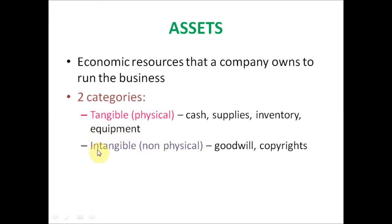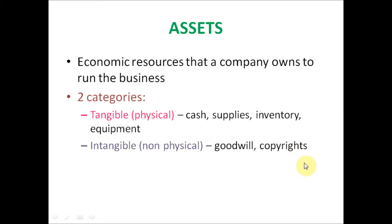The second category is intangible, which is non-physical, meaning you can't see those assets. Examples would be goodwill, copyrights, and many more.